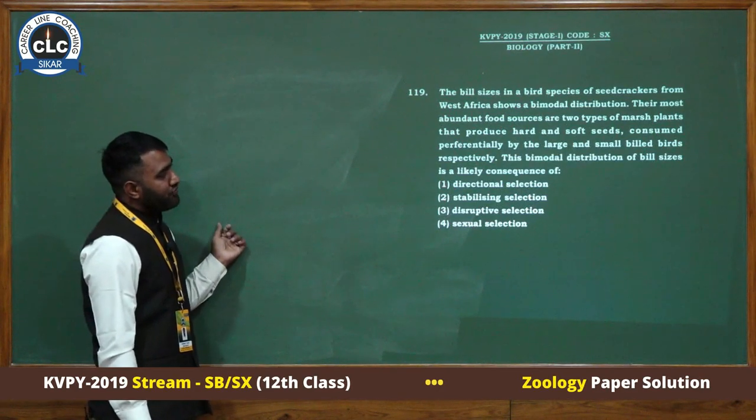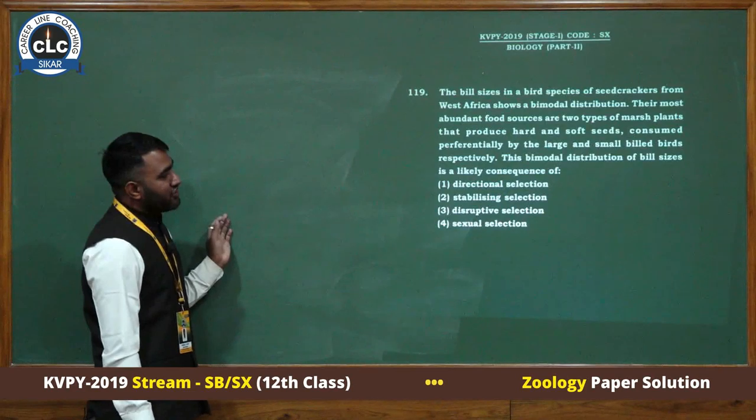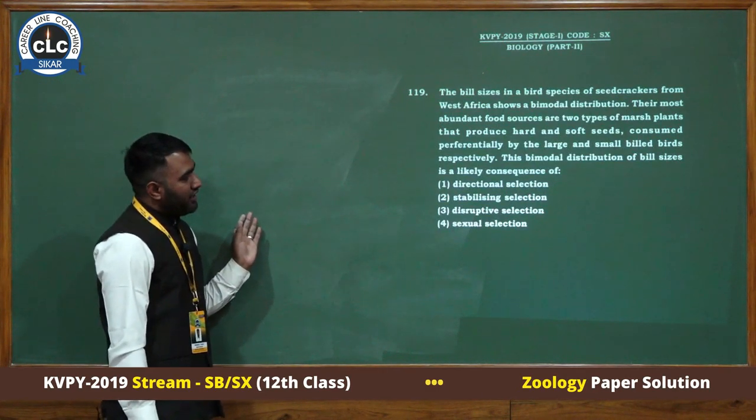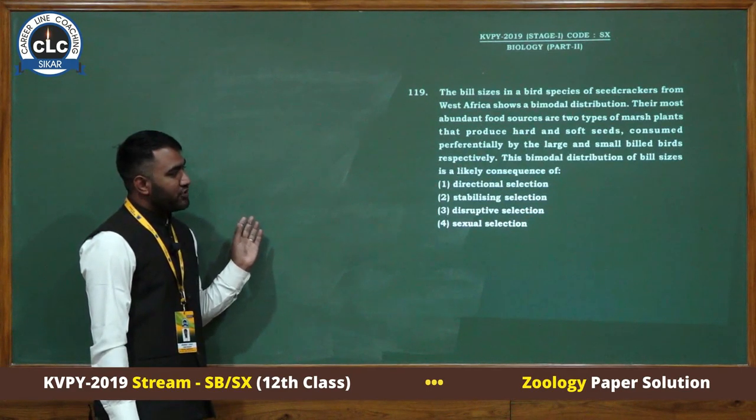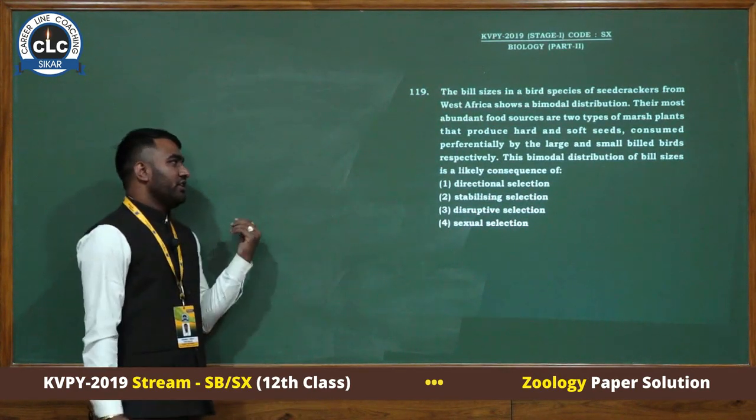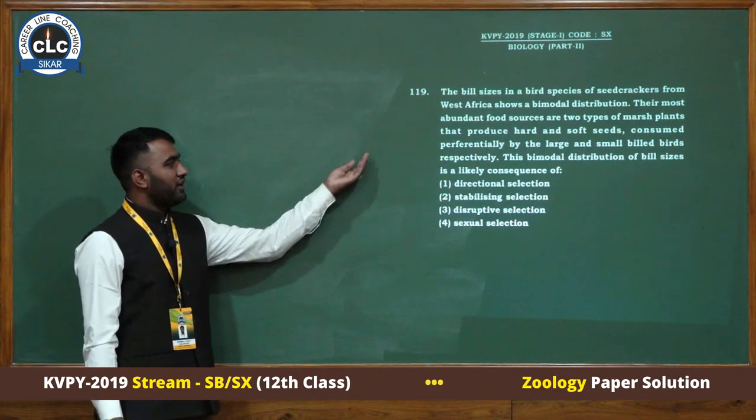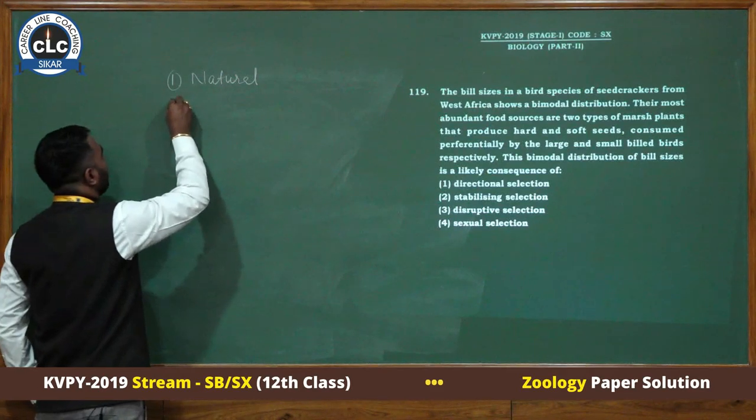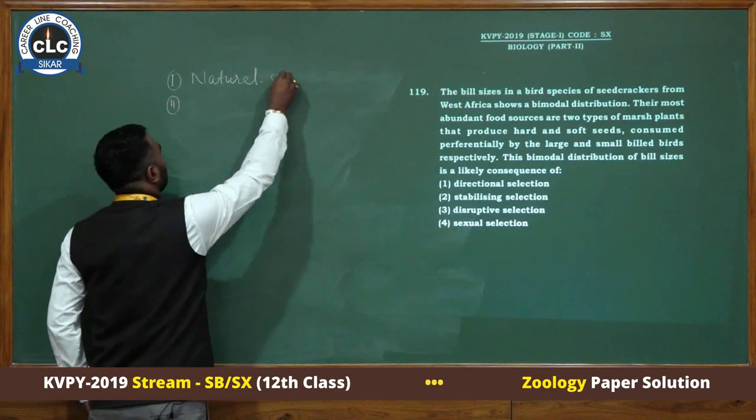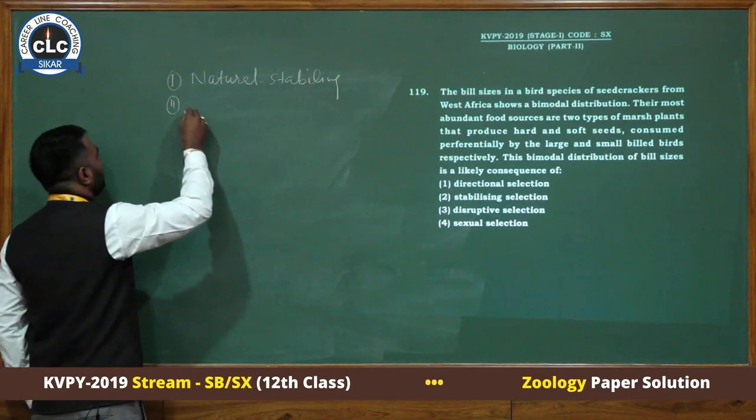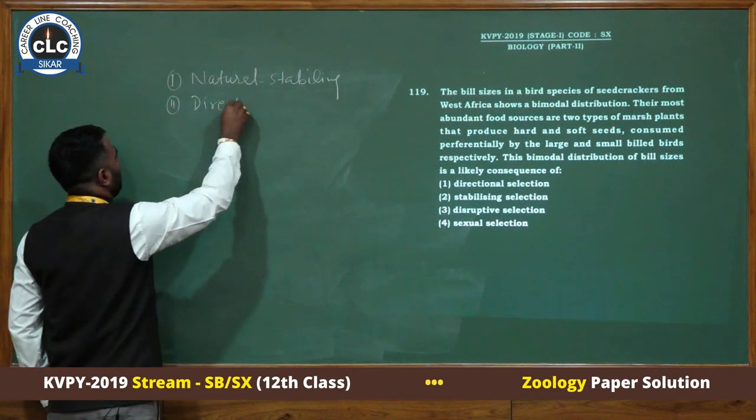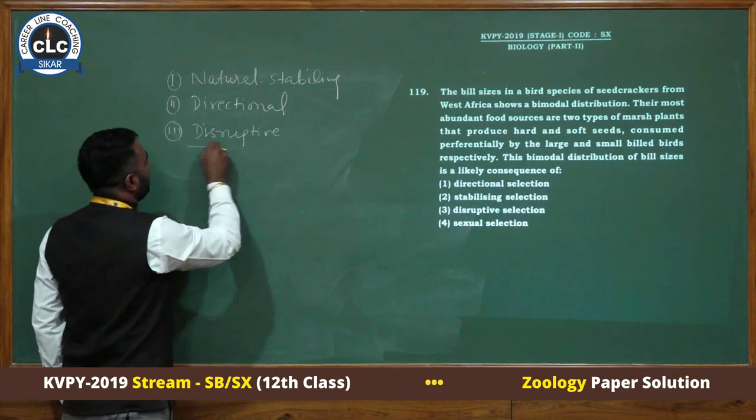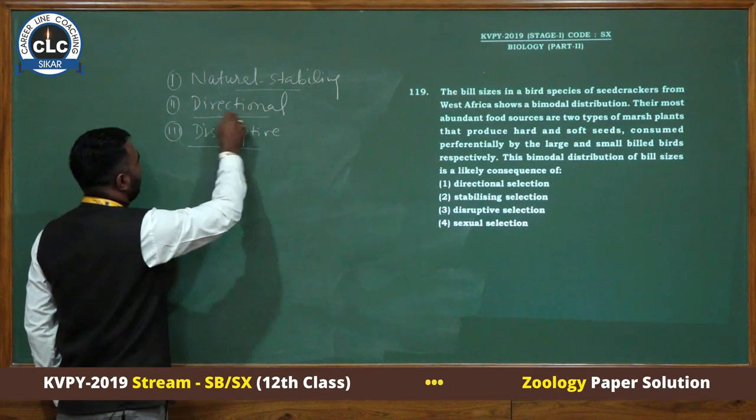The bill size in a bird species of seed crackers from West Africa shows a bimodal distribution. Their most abundant food sources are two types of marsh plants that produce hard and soft seeds, consumed preferentially by large and small billed birds respectively. The bimodal distribution of bill size is a likely consequence of what? This question is from the selection part, evolution. There are three types of selection: natural stabilizing selection, directional selection, and disruptive selection.